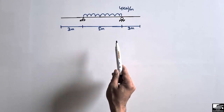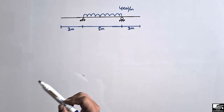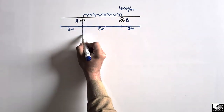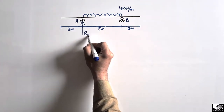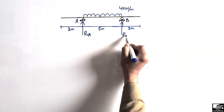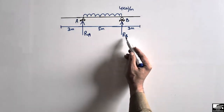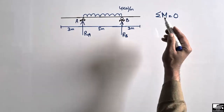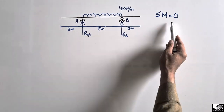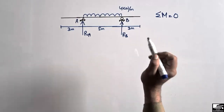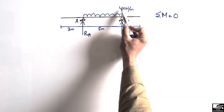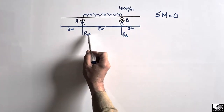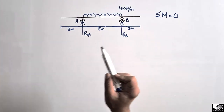We have to analyze this beam to find the support reactions and draw the shear force and bending moment diagram. Let's call the supports A and B — they will provide upward reactions RA and RB. There is a shortcut way to find these reactions: instead of using the sum of moments equal to zero, we can simply multiply the load by the distributed length to find the total load, then divide by 2.